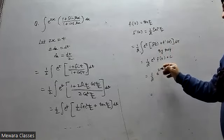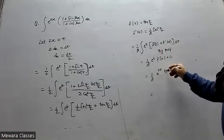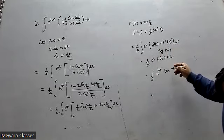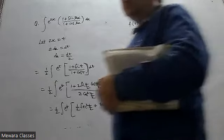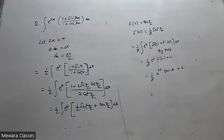Value of t is 2x. So tan of t, in place of t put 2x, giving us tan x plus c. So the value is 1 by 2 e to the power 2x tan x plus c.